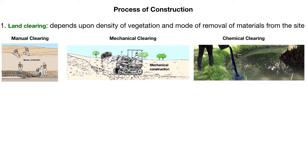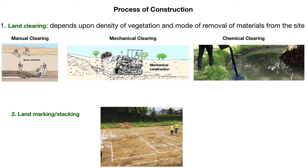Chemicals are also used to eradicate unnecessary aquatic weeds. After the land is cleared, it is marked for the construction of various farm elements as per the layout plan. Dry white lime powder is used to show the positions of various farm elements like dykes, channels, and ponds to be constructed. This process is also called staking.